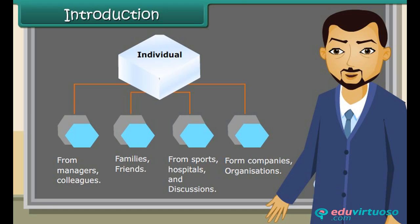Types of data: Primary data and Secondary data. Data which are not originally collected but obtained from published or unpublished sources are called secondary data.